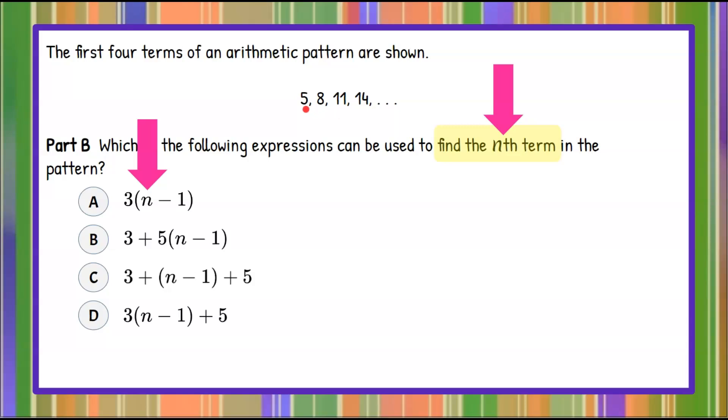So 1 would represent the first term, 2 the second term, 3 the third term. So instead of nth term, first term, second term. So the n is the term number in the sequence you're looking for.